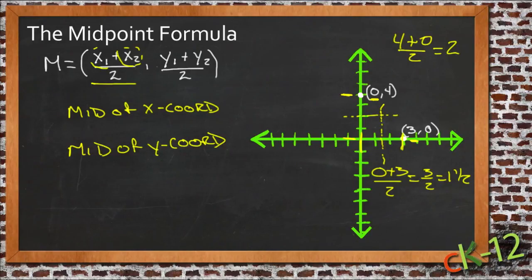If we have a line right here that connects these two points here to here, then the middle of that line is right here at 2 and—oops, I'm sorry—at 1 and a half and 2, because the x coordinate goes first, my bad. 1 and 1 half, 2.